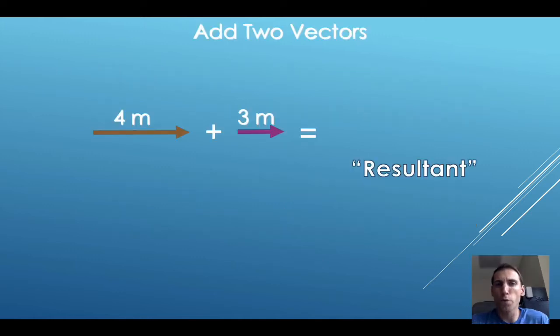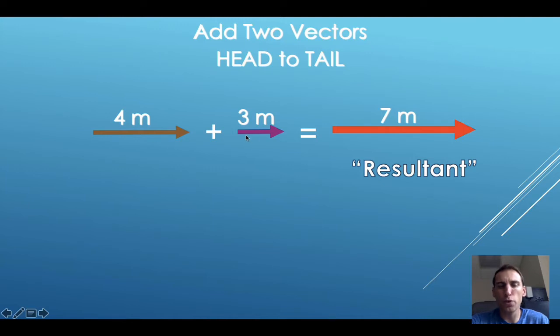For example, if we have a 4-meter vector pointed to the right, and we add a 3-meter vector also to the right, we end up with a 7-meter vector to the right. This is pretty straightforward. We add these two vectors head to tail. We have 4 meters, then another 3 meters, and then if we were to draw the resultant from the start to the very end, the length of that vector would be 7 meters, and the direction of that vector would be to the right.